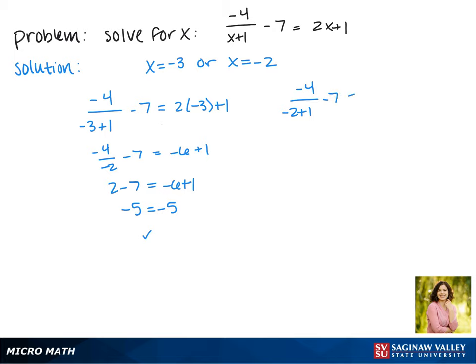Doing the same thing with negative 2, we're going to plug it back into our equation. We get negative 4 over negative 1 minus 7 equals negative 4 plus 1.